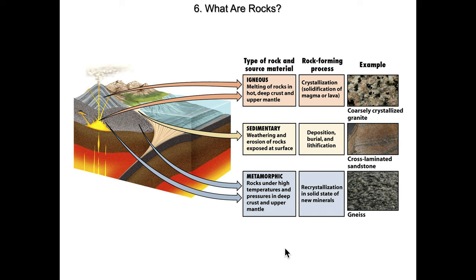Here we have a standard schematic of a cross-section of a subduction zone with the associated continental volcanics, or island arc volcanics if we're in the western Pacific. Starting with igneous rocks, we provide the source material by melting rocks in the hot deep crust and the upper mantle. This includes material that gets pushed down a subduction zone as seen here. The rock forming process is the crystallization or solidification of magma if it's within the earth, or lava at the earth's surface.